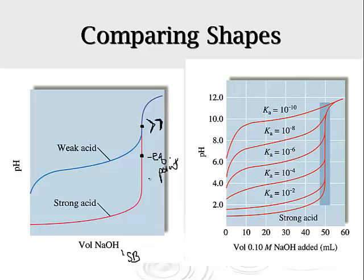And this just shows you some shapes - the weaker the acid that you have, how it's going to change the shape of the curve and how it's going to start at different values and change the equivalence point. So there's just some pattern stuff here that you should be familiar with.